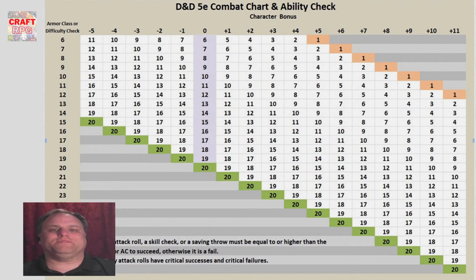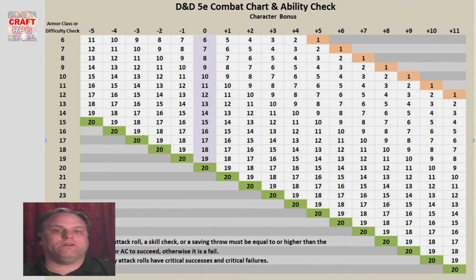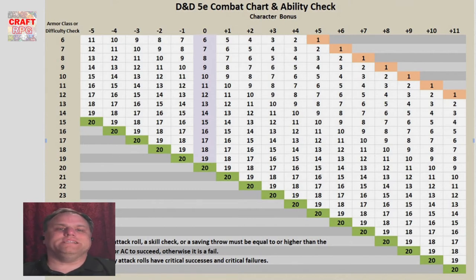Hello, welcome back. In this video we're going to discuss how in one table we can have a handout for a player and they can answer the question about a combat, a saving throw, a skill check, all in one single table. It's a very easy to use table that you hand to a player and they just run with it. It's my D&D 5e combat chart and ability check and saving throw table.